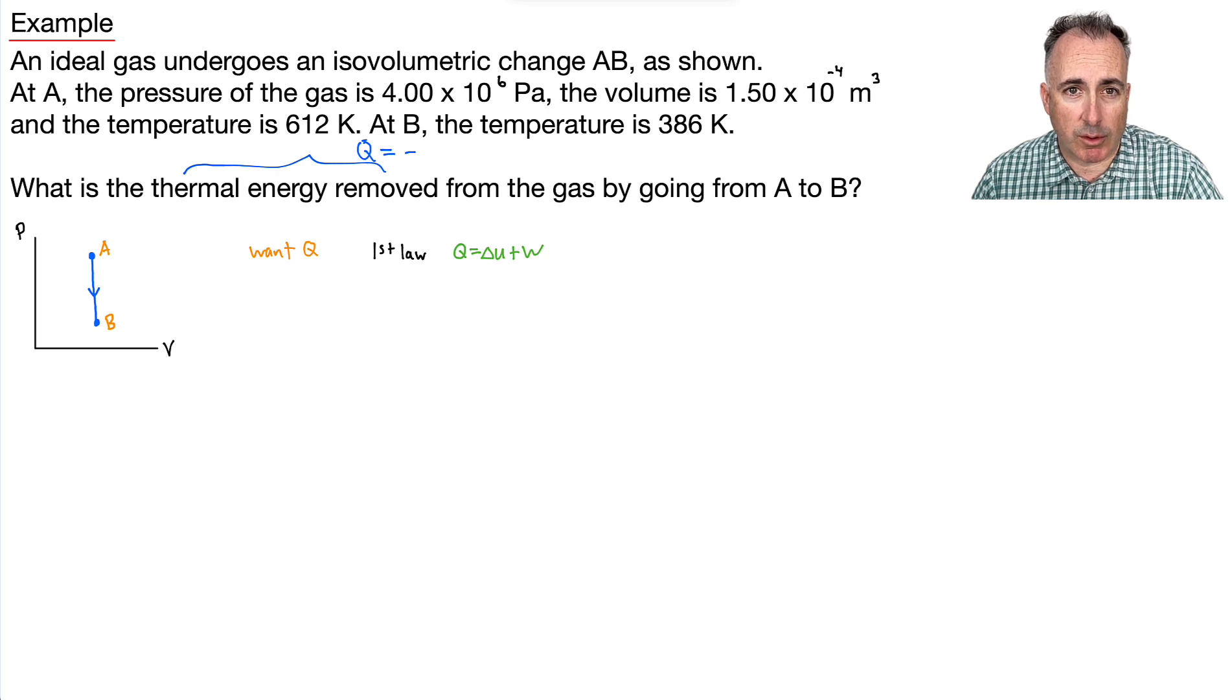Now, it's important to remember what we can do here because work done, this W right here, that is always the area under the graph. Remember that. Well, because of that, because it's the area under the PV graph, this is going to be zero because the area is zero.